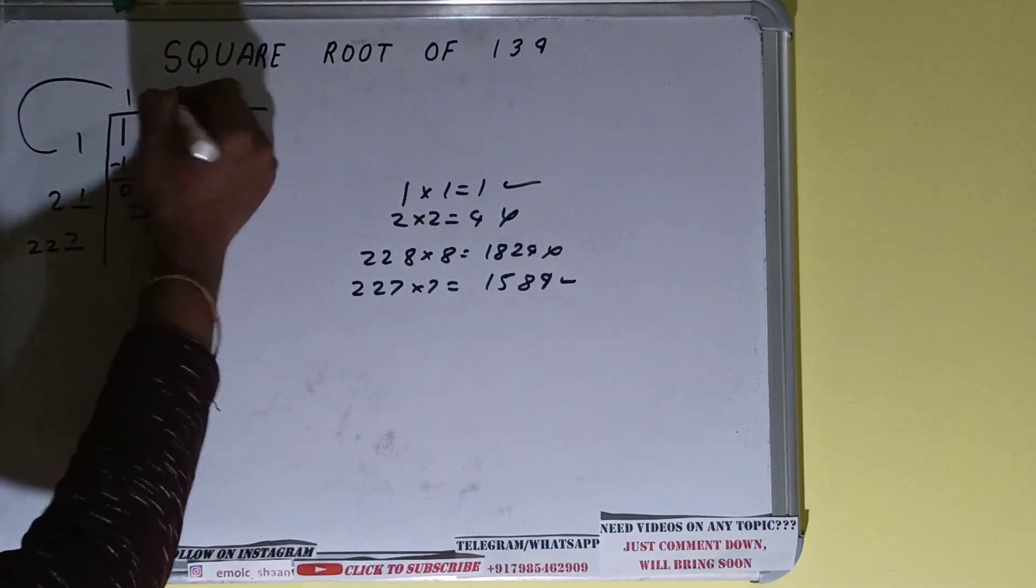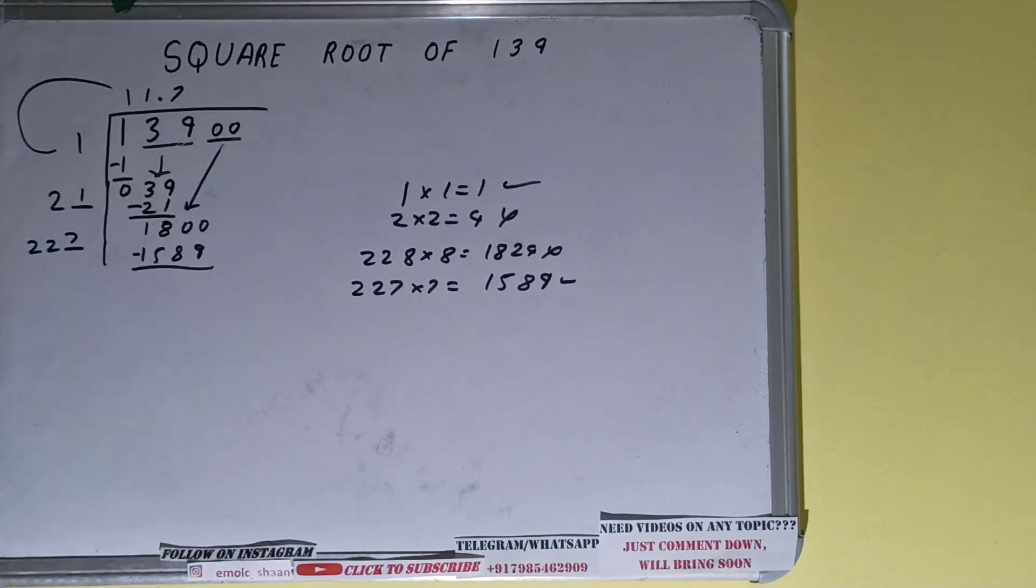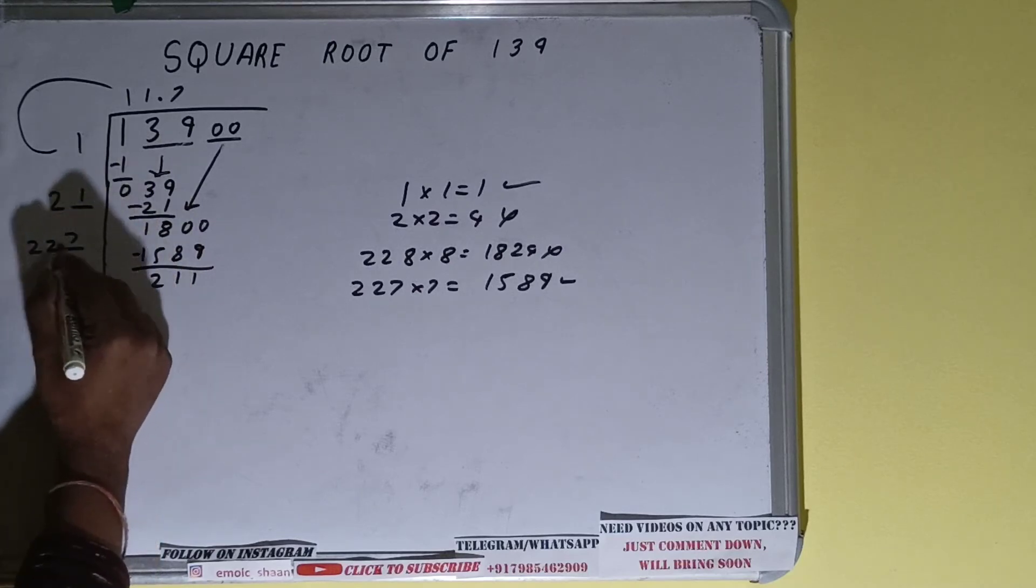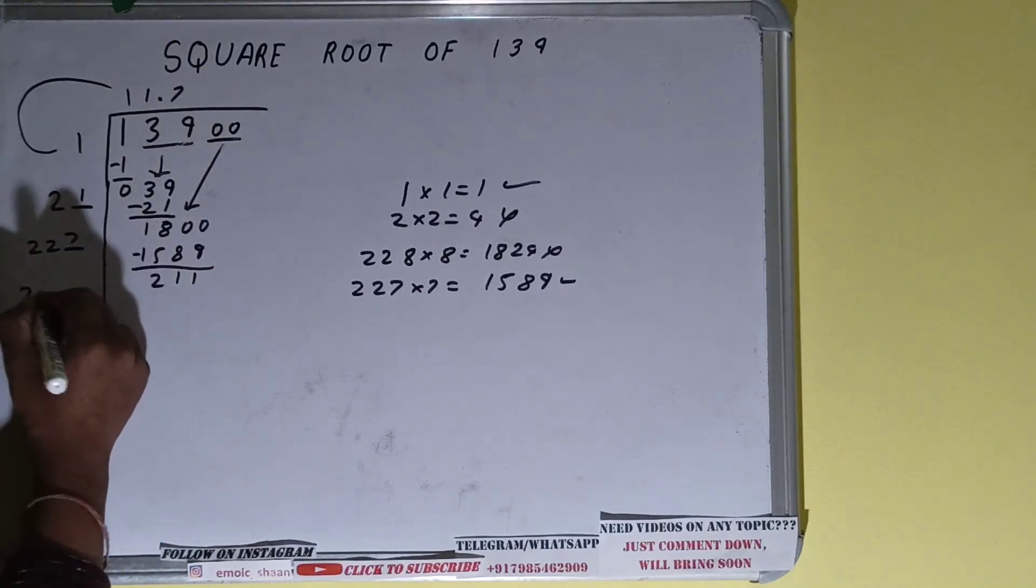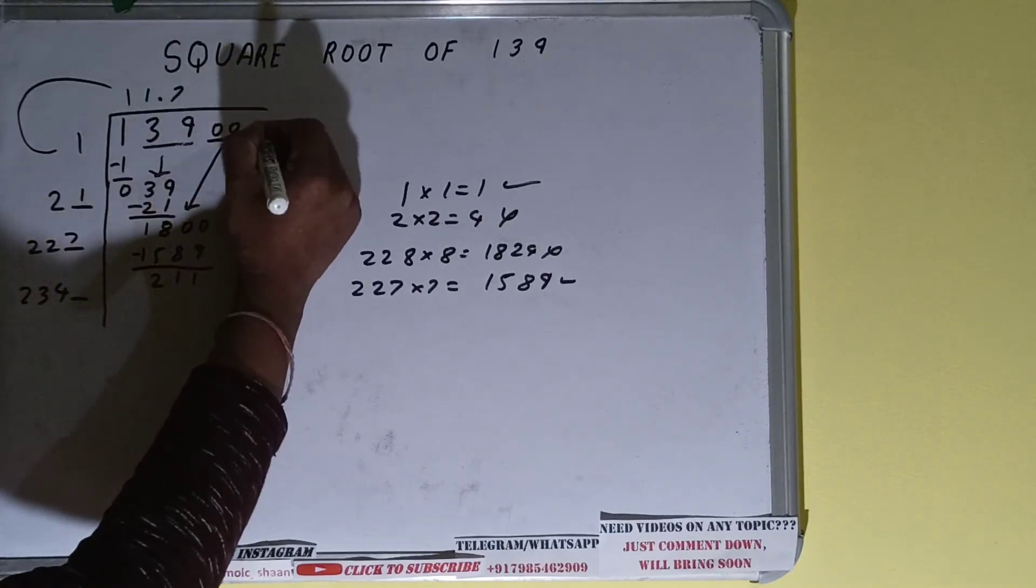So we have to go seven times, it will give 1589 which is all right to take. So seven here and seven here, 1589, subtract it, we'll be left with 211. Now this 227 into 7 we did, so add both. 227 plus 7 will be 234 and one digit extra.